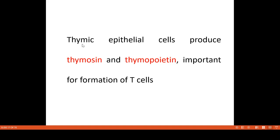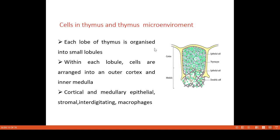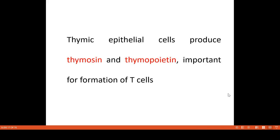Thymic epithelial cells produce two molecules called thymocin and thymopoietin. These are involved in the formation of T cells and play very important roles. These are thymic epithelial cells, producing thymopoietin and thymocin.